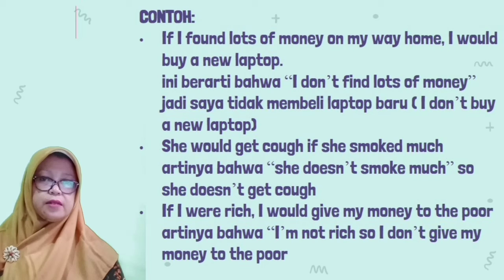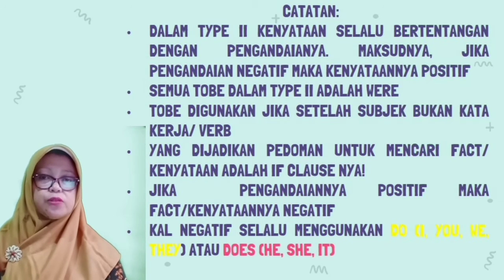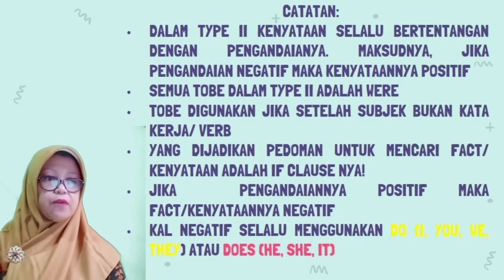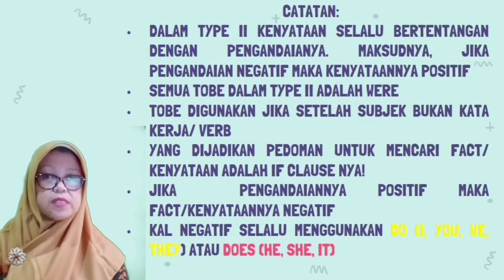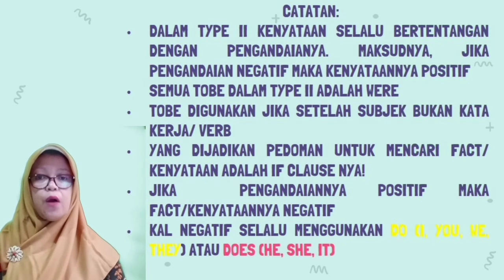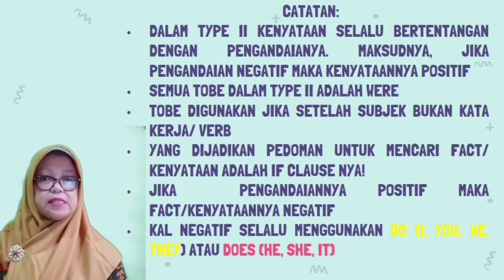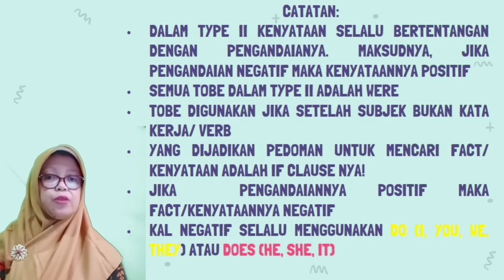Ada beberapa catatan untuk kalimat pengandaian tipe kedua. Catatan pertama: dalam tipe kedua, kenyataan selalu bertentangan dengan pengandaian — jika pengandaian negatif, maka kenyataannya akan positif. Catatan kedua: semua to be dalam tipe kedua yang dipakai adalah 'were'. Jadi, to be 'was' tidak dipakai untuk pengandaian tipe kedua. To be digunakan jika setelah subject bukan kata kerja, baru kita menggunakan to be 'were'.